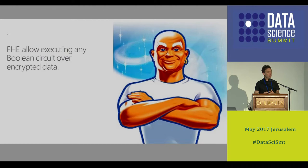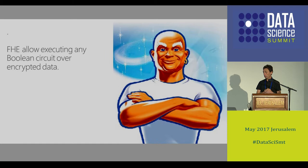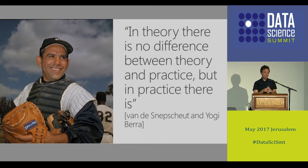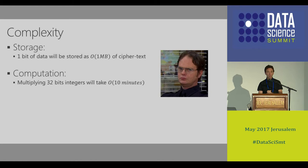Why is it so special? Because with fully homomorphic encryption you can actually take any function that you can express as a Boolean circuit and apply it on encrypted data. That's quite powerful. But unfortunately - there is no difference between theory and practice, right? There is a gotcha, and the gotcha is that it's going to be very slow and very expensive in terms of storage.